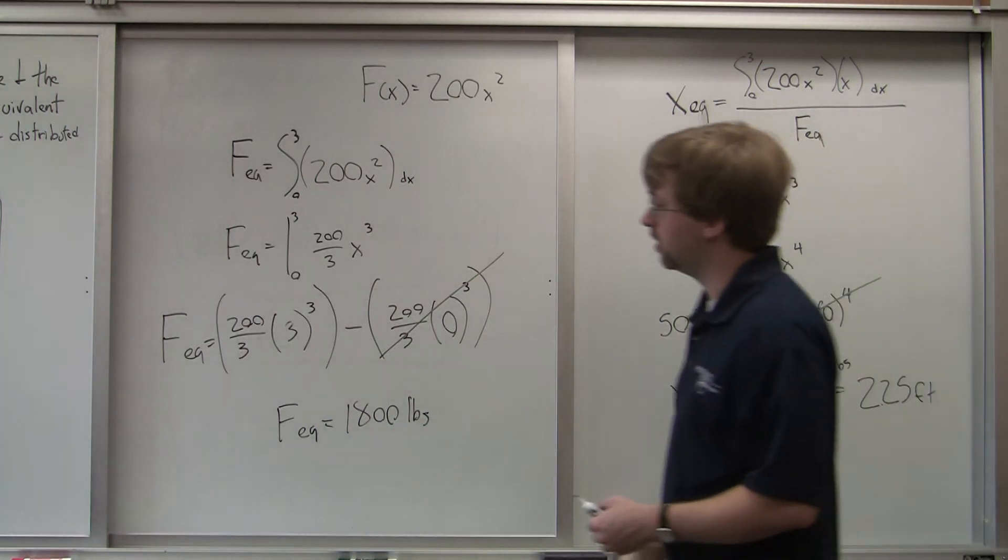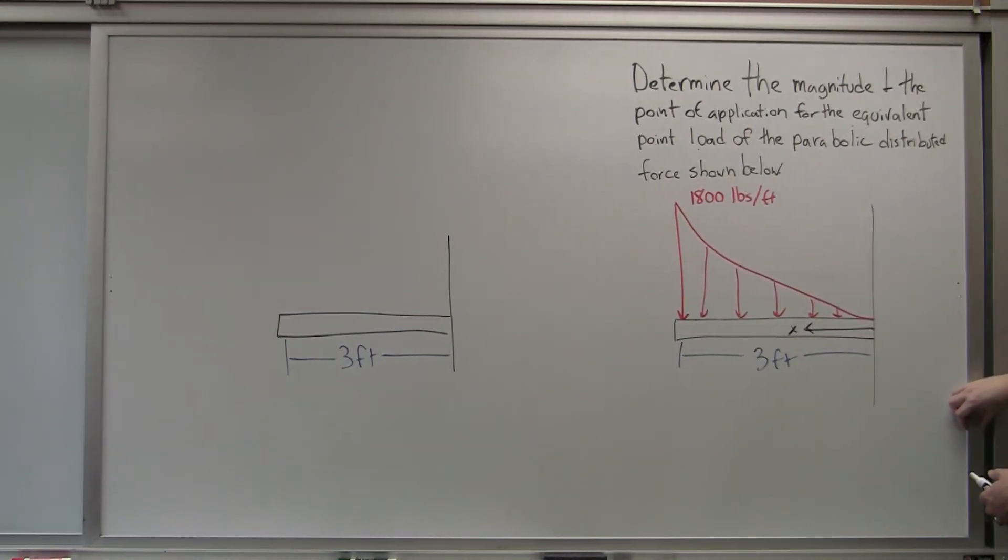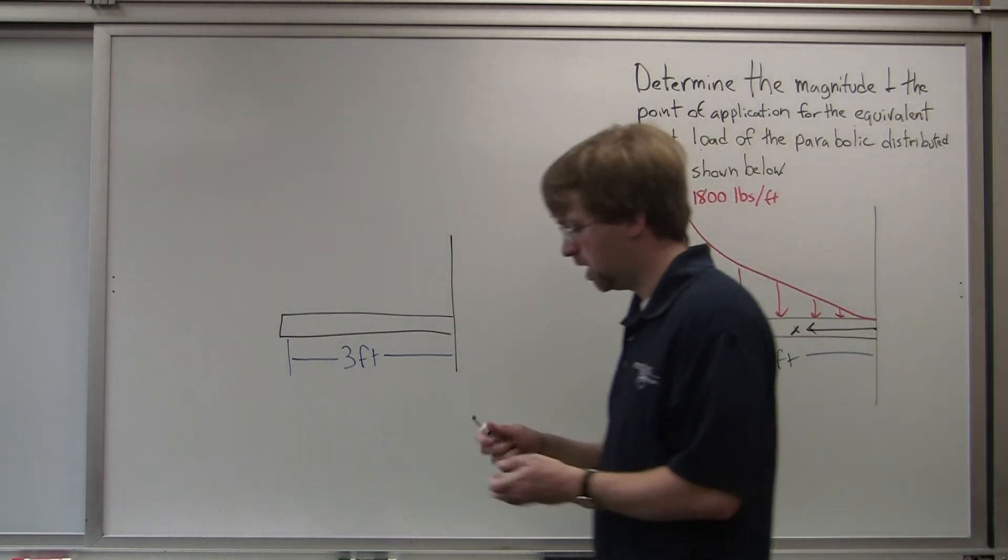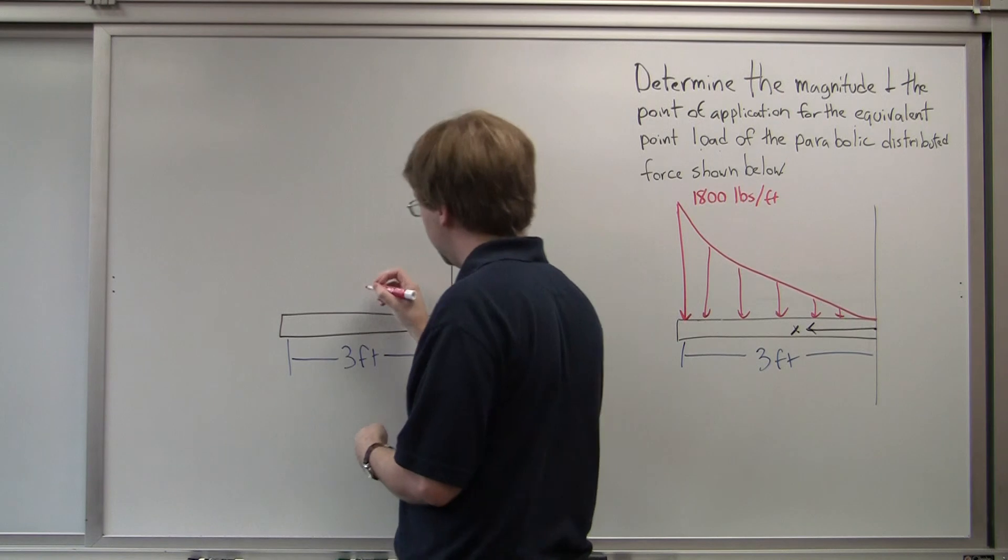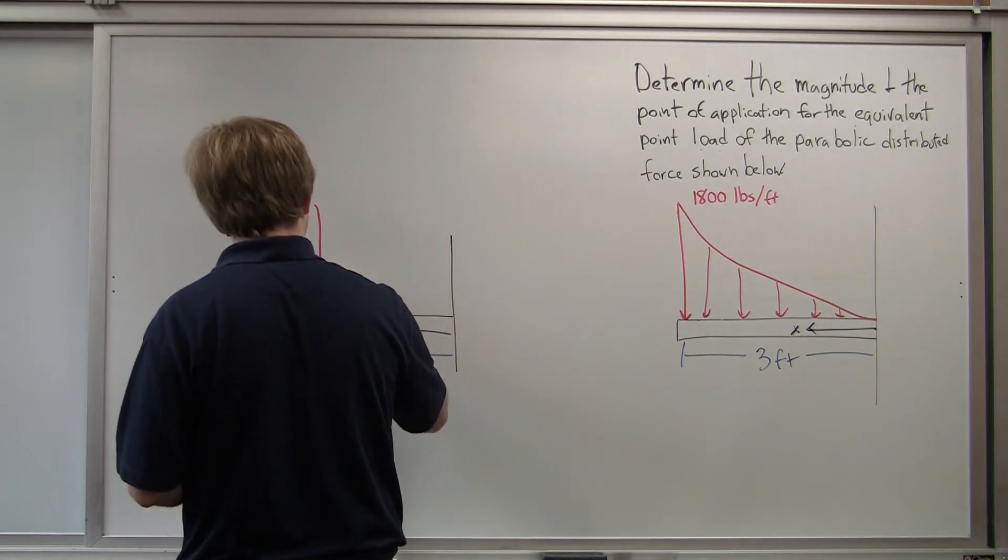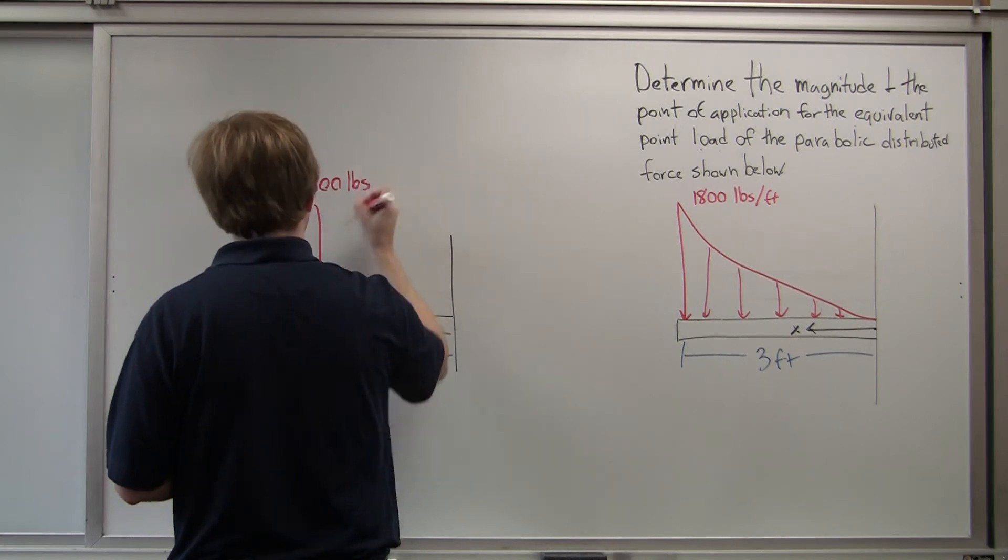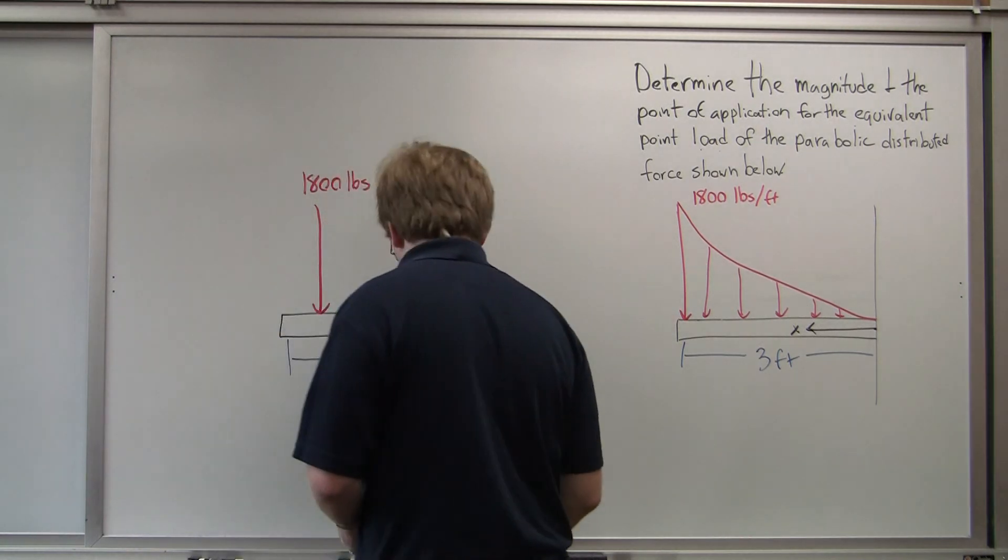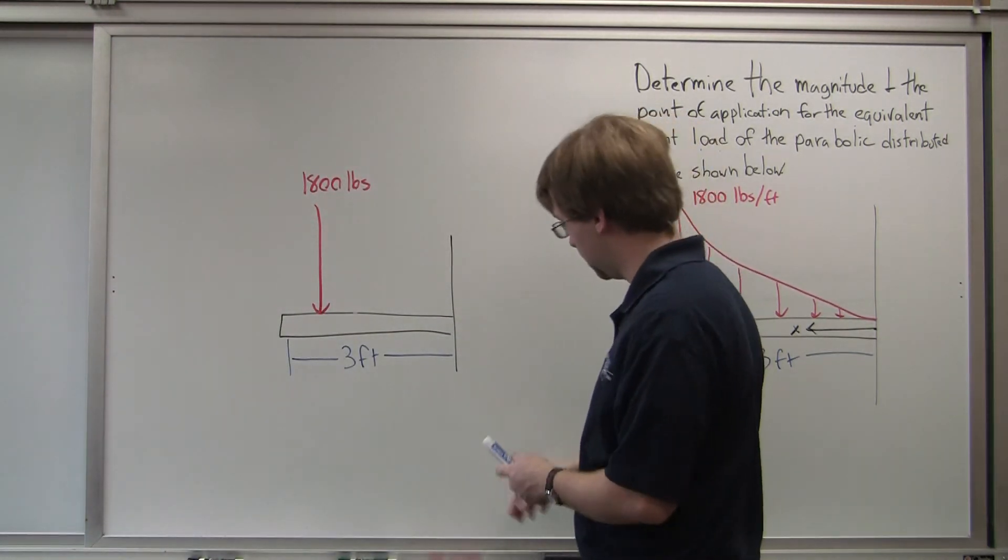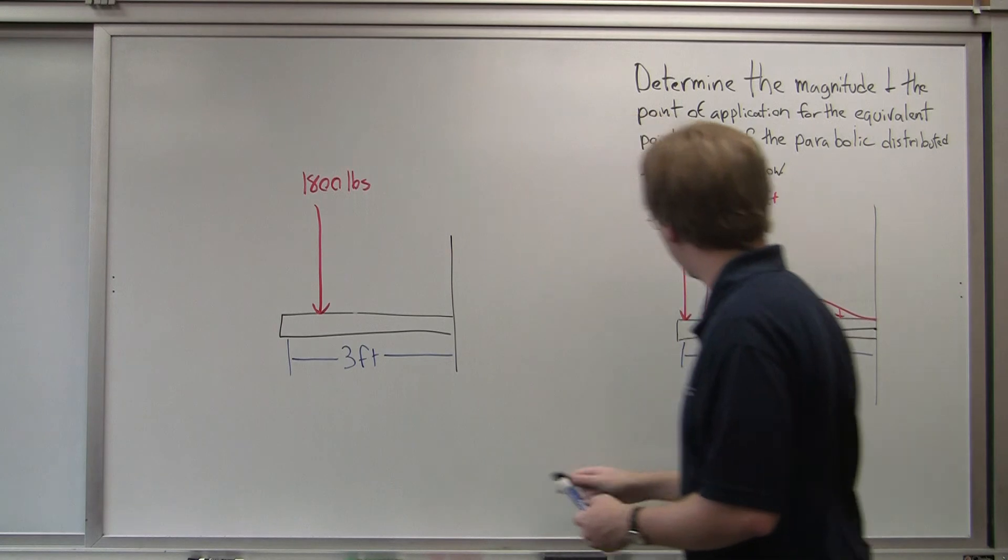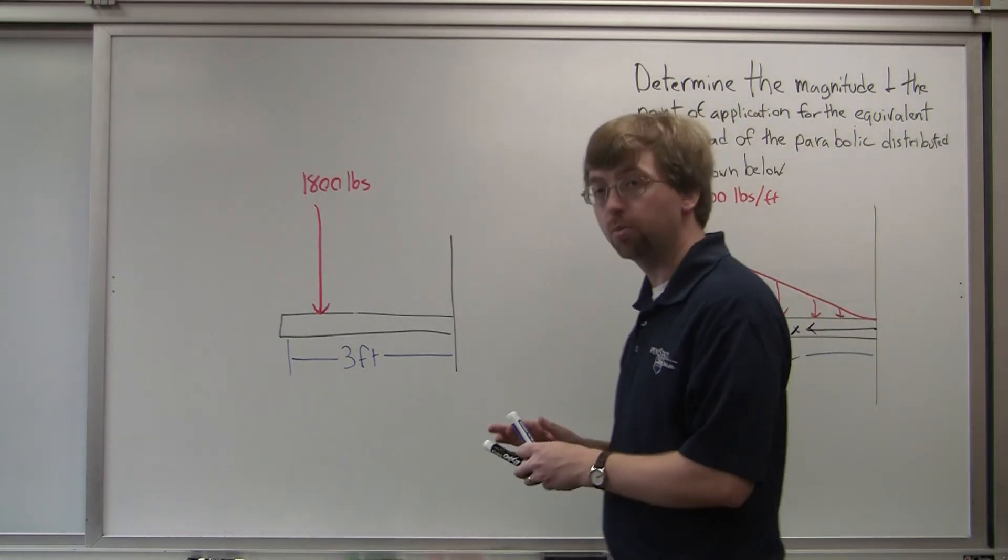Last thing I'm going to do is go ahead and put that back on the diagram, draw out the equivalent point load. So I know, again, f e q was a force of 1800 pounds, and x e q was 2.25 feet, and that's going from the same original zero. So 0 is over here, I go this way by 2.25 feet.